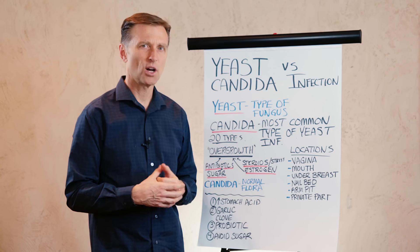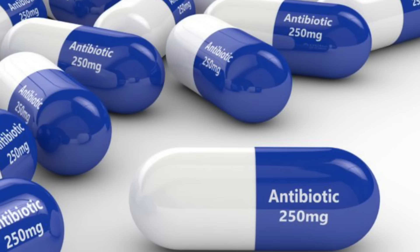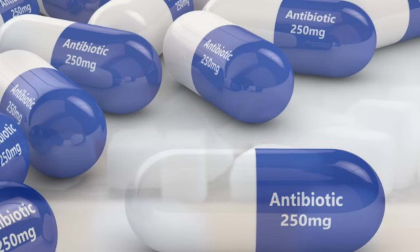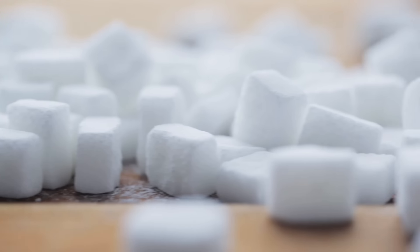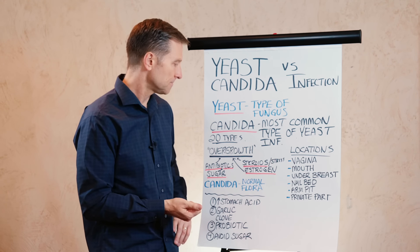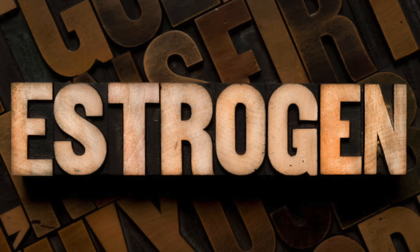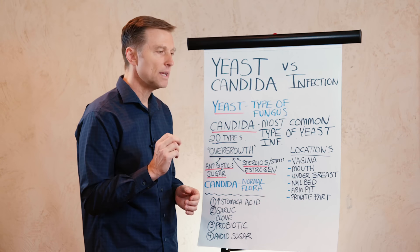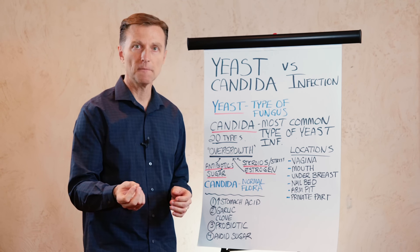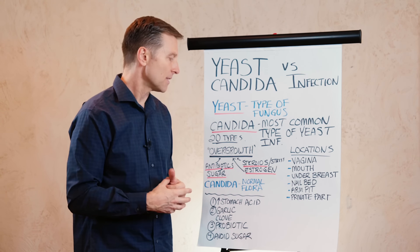So what creates this overgrowth situation? Antibiotics will do it. Sugar will do it because candida and yeast live on sugar — it ferments certain types of sugar. Steroids and stress will cause the overgrowth. Estrogen will cause the overgrowth, which is why women can get a yeast infection during certain times of their cycle, and it's one of the side effects of birth control pills and hormone replacement therapy.